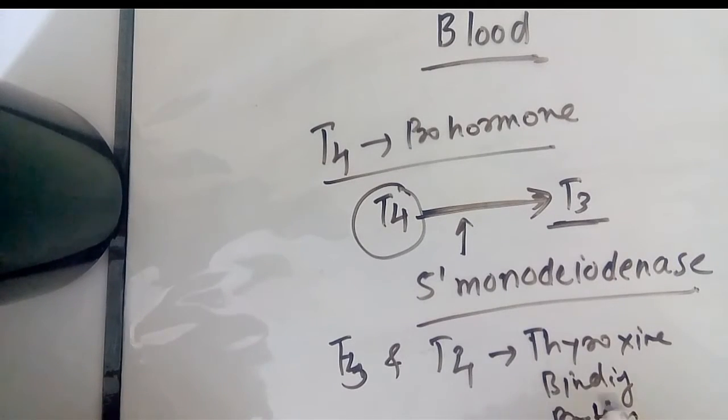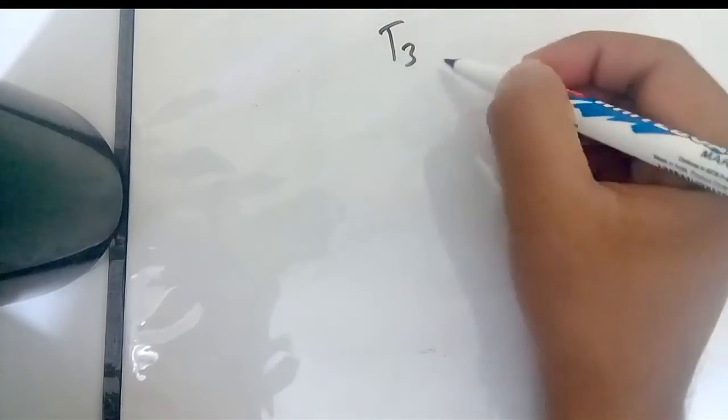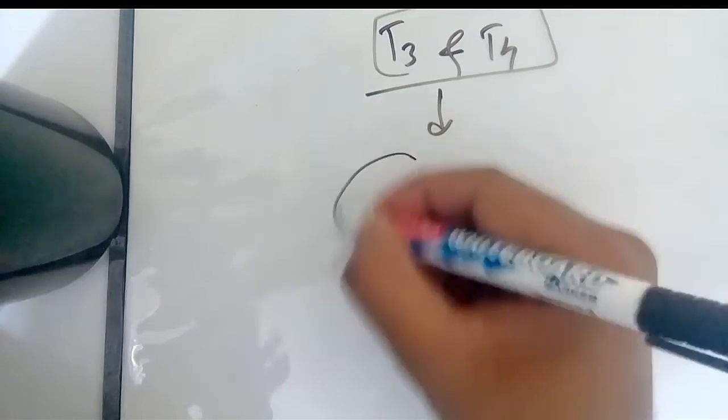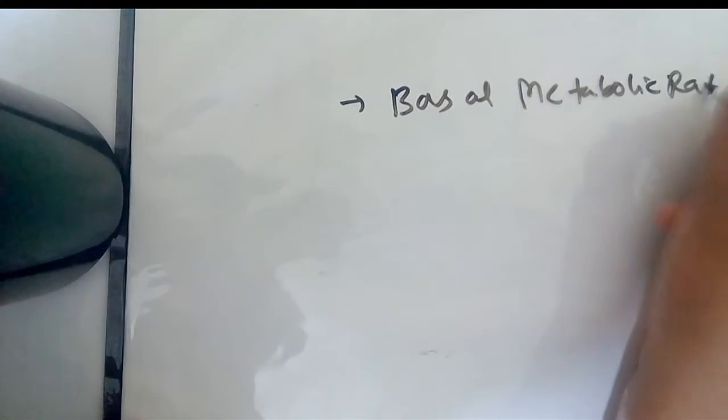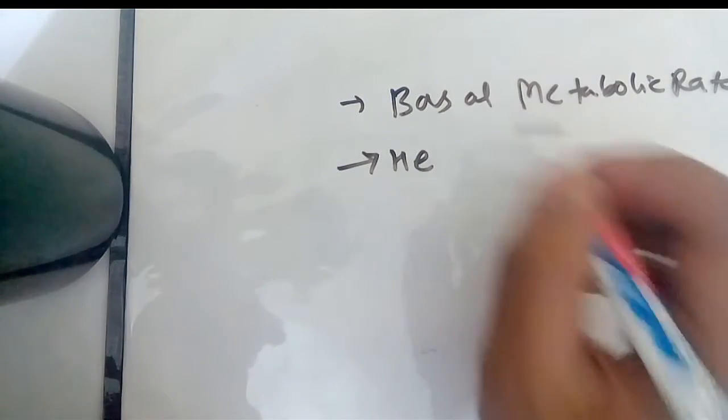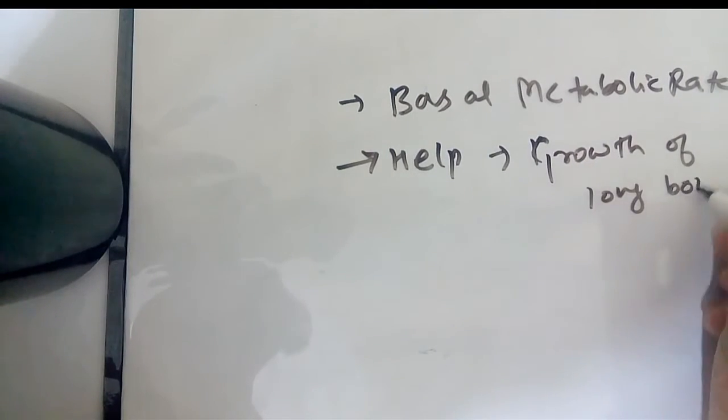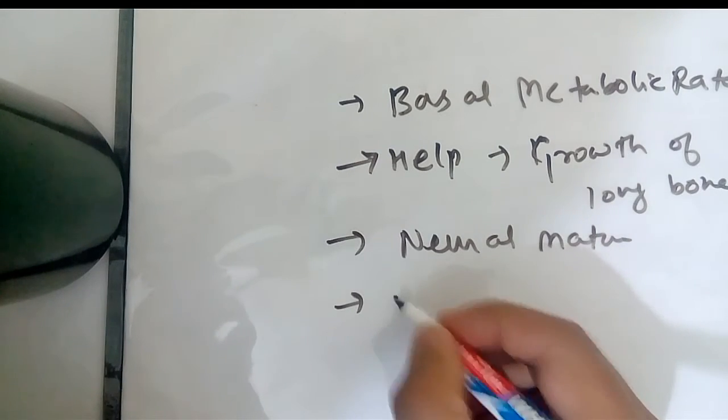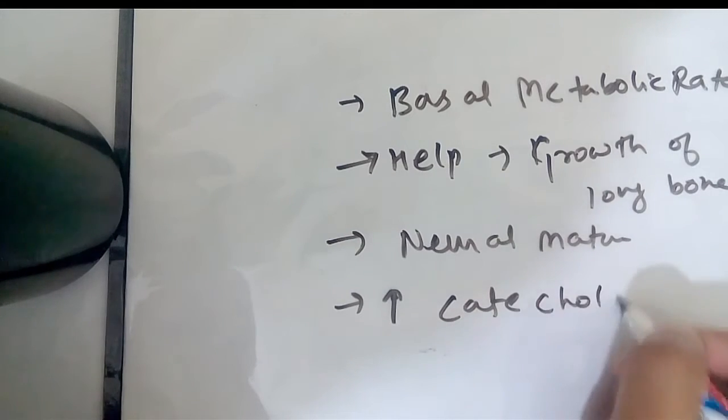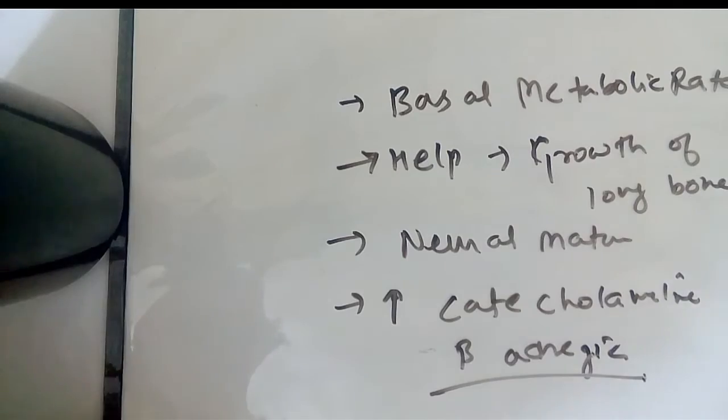Some of this binds to the protein and the rest are in free form. T3 and T4 that are in free form go to various organs and act on them. They regulate the basal metabolic rate. Secondly, they help to regulate the growth of long bones. Thirdly, they are helpful in neural maturation and they increase the sensitivity of the body to catecholamines. There are many different functions of the thyroid gland.